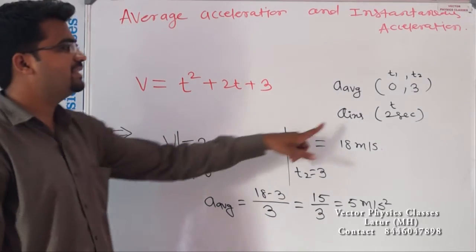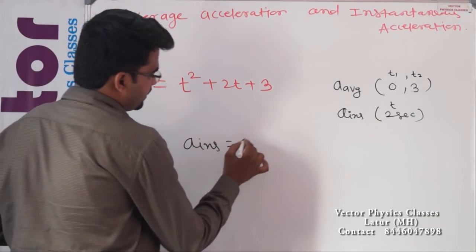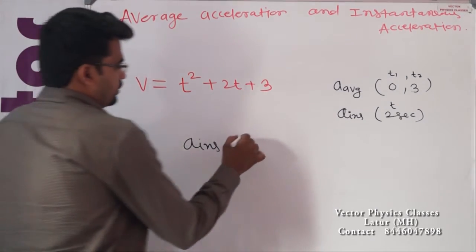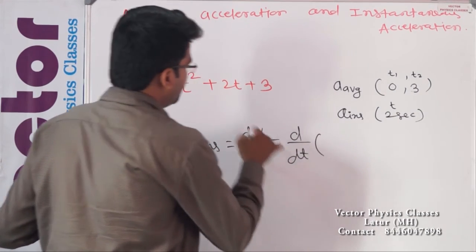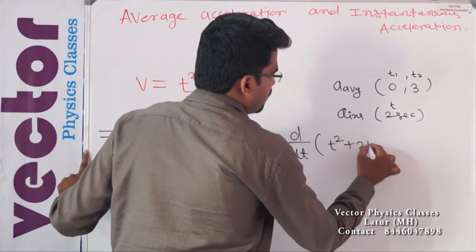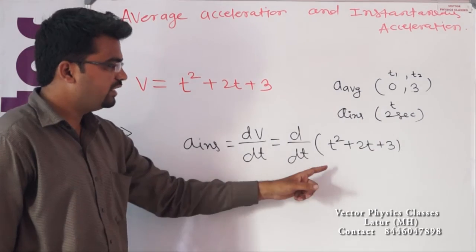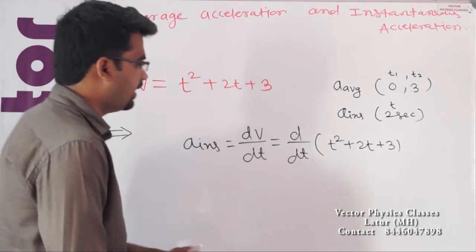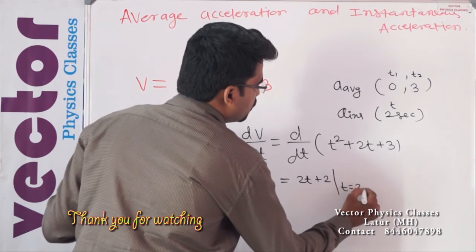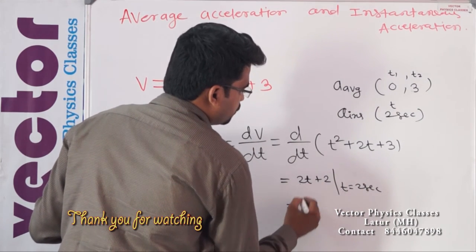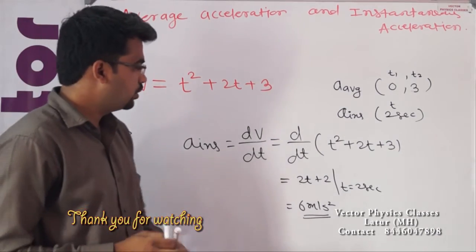Now, instantaneous acceleration at t equal to 2 seconds: instantaneous acceleration equals dV by dt, which is d by dt of t squared plus 2t plus 3. Differentiating, we get 2t plus 2. At t equal to 2 seconds, that is 2 into 2 plus 2, which equals 6 m/s². This is the solution of the question.